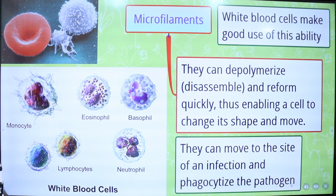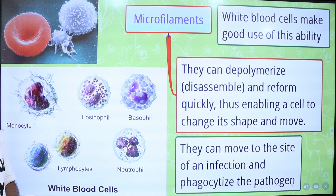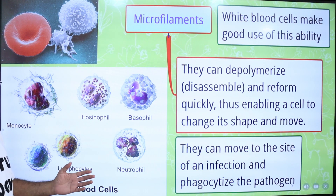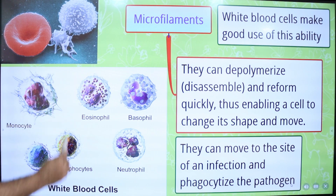White blood cells also make good use of this ability. White blood cells defend against infection and disease by ingesting foreign materials and cellular debris, by destroying infectious agents and cancer cells, and they are also involved in the production of antibodies. They can move to the site of infection and phagocytize the pathogen. In our blood we have red blood cells, white blood cells, and platelets, and there are five types of white blood cells present in our blood.